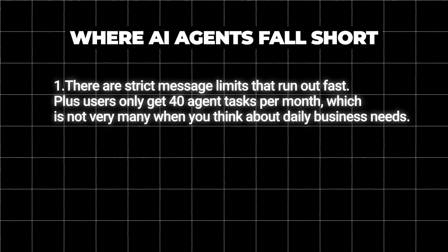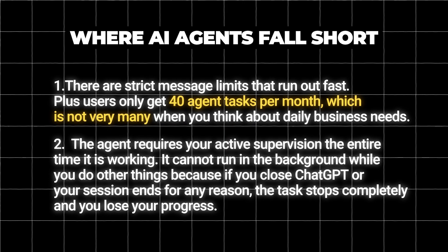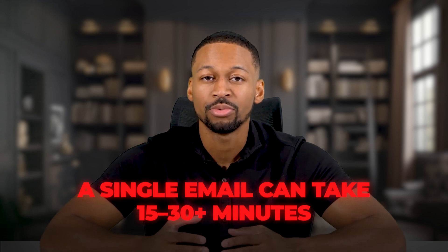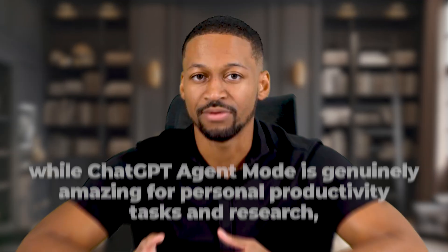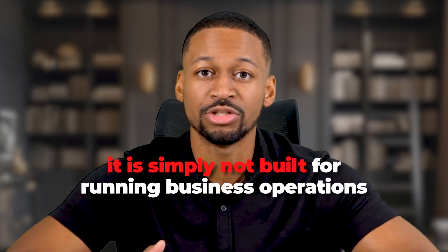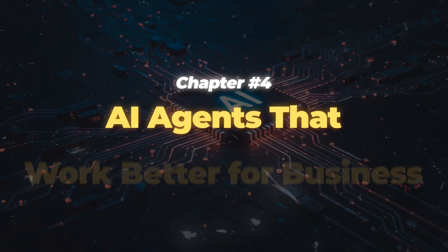But here's where things get tricky for businesses trying to use this technology for customer-facing work. First, there are strict message limits that run out fast, and users only get 40 agent tasks per month, which is not very many when you think about daily business needs. Second, the agent requires your active supervision the entire time it is working — it cannot run in the background while you do other things, because if you close ChatGPT or your session ends, the task stops completely and you lose your progress. And basic tasks like sending one email can take anywhere from 15 to 30 minutes or even longer to complete. So while ChatGPT agent mode is genuinely amazing for personal productivity tasks and research, it is simply not built for running business operations, which brings me to chapter four: AI agents that work better for business.